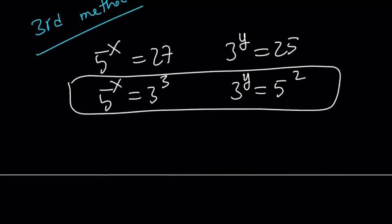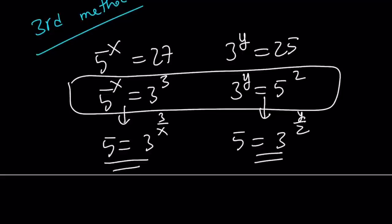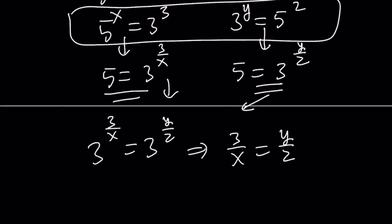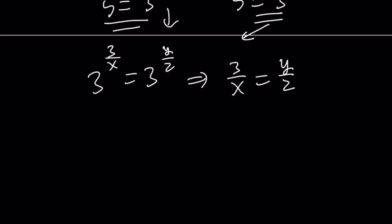We can go ahead and isolate 5 from here. We can write the 5 as 3 to the power 3 over x. And from here, we can write the 5 as 3 to the power y over 2. So these are both equal to 5. If two things are equal to the same thing, then they're equal. So 3 to the power 3 over x equals 3 to the power y over 2. And that implies 3 over x equals y over 2. And from cross multiplication, this just means that xy is equal to 6.